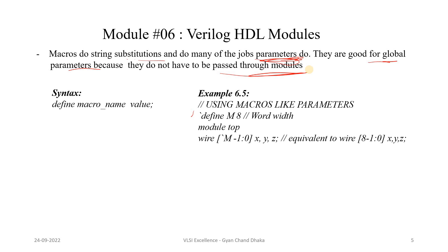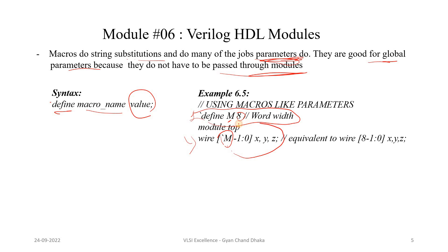The syntax of a macro is tick define, then the macro name and the value. For example, we have a macro called m with a value of 8. We can define this macro in one file and include that file in all the modules. Whenever there is a tick m in any module, tick m will get replaced by the value 8. This is how we use macros in our Verilog HDL file.